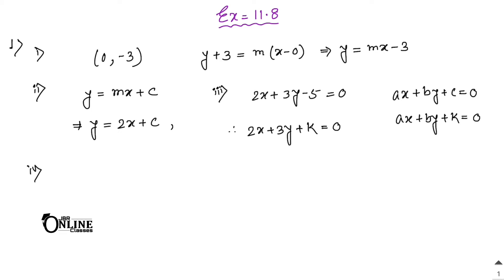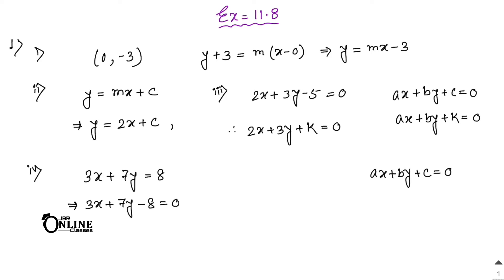Number four: perpendicular to the line 3x + 7y = 8, which we write as 3x + 7y - 8 = 0. If you have a line ax + by + c = 0, the perpendicular line will be bx - ay + k = 0 — interchange the coefficients of x and y. So the required line is 7x - 3y + k = 0, where k is the parameter.